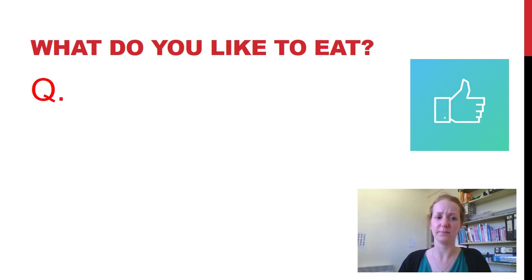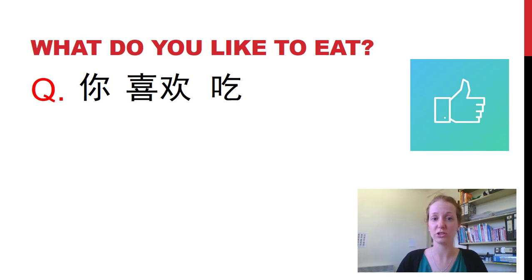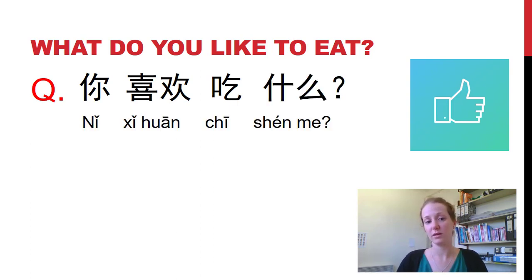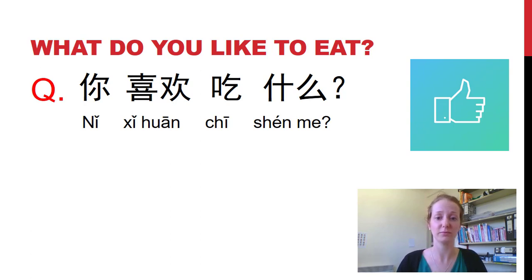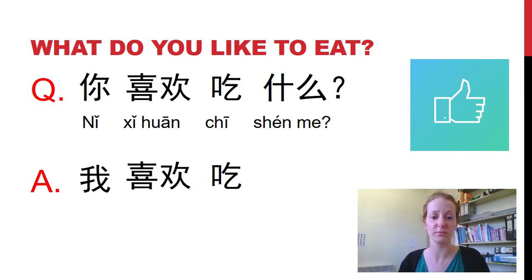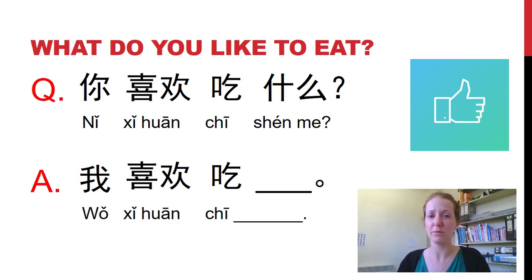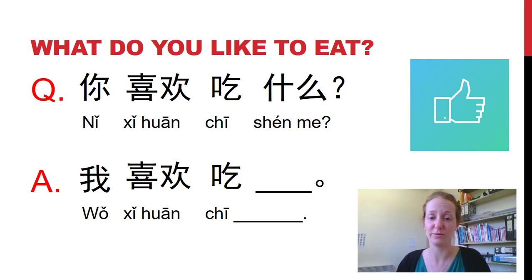So how do we ask what do you like to eat? 你喜欢吃什么? You like to eat what? How do we answer? Remember in Chinese we take out the question word and put in the answer. So in the 什么 spot, we put our answer — for example, 我喜欢吃 something. Take a moment to look back through the words you've written down and write a sentence saying what food you like to eat. Just choose one. Once you've done that, you can move on.